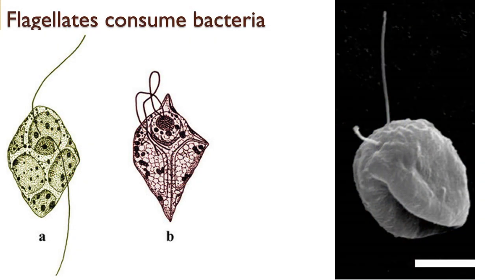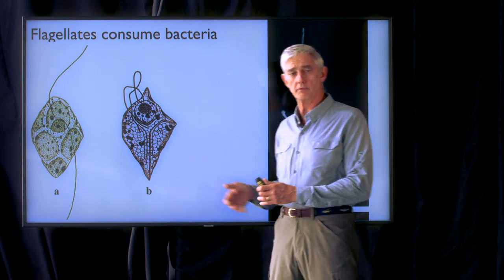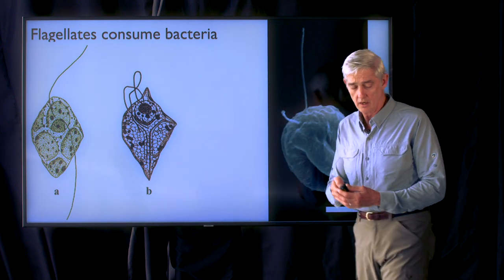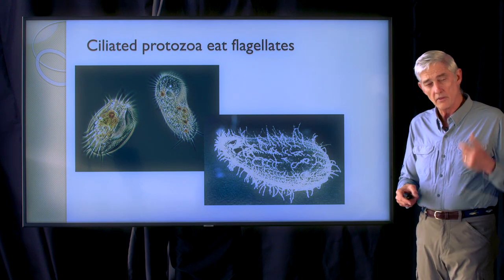This is a picture of a couple of different kinds of flagellates. They're single-celled eukaryotic organisms called flagellates because they have one large flagellum that beats to move them through the ocean. These are just drawings of a couple of different types of flagellates that are common in the ocean.